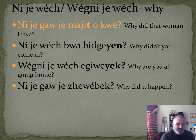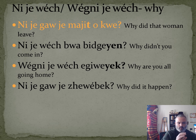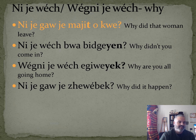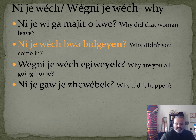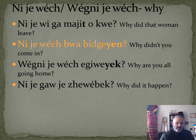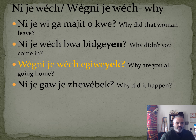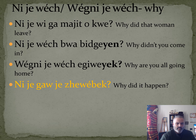Now for 'why': it can be ninja wetch, wek ninja wetch, and variations using gaoja for past tense or waoja for future. Ninja gaoja majit okwe means 'why did that woman leave?' Ninja wetch bwa bdge in means 'why didn't you come in?' — bdge is the verb 'to come in,' yin is 'you,' bwa makes it negative, and wetch indicates 'why.' Wek ninja wetch skie geway yak means 'why are you all going home?'